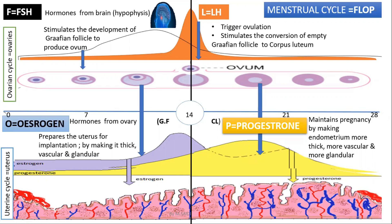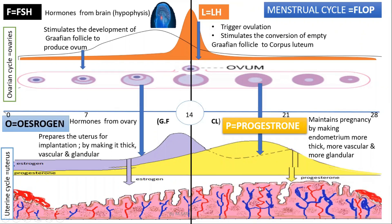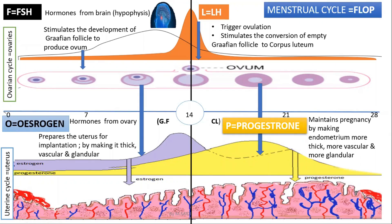Now the endometrium wall has increased — more blood vessels, more glands. It is now thick and ready. If it's a marriage, this is the time when you are done with the wedding and now you are going to honeymoon — you are going to be looking for the baby. The endometrium wall is more thick, more vesicular, with increased blood vessels, and more glands. Now it can secrete substances.